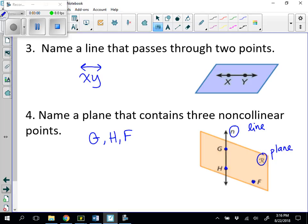So those are my three points. And when I name the plane, I'm going to name it with those three points. So I can name it plane GHF. Or I can name it with this letter right here. I can name it plane R. Okay, so I have two options when I name planes if there's that letter in the corner.